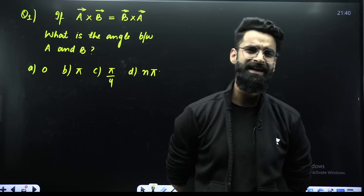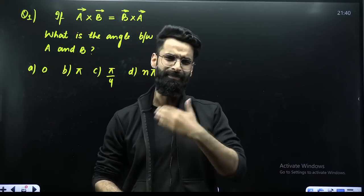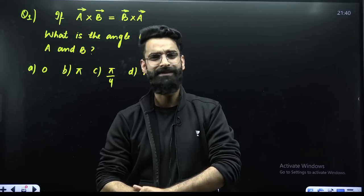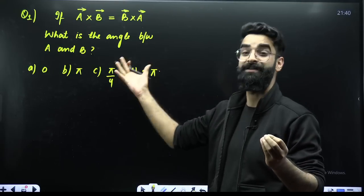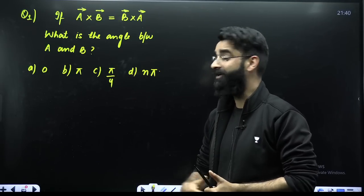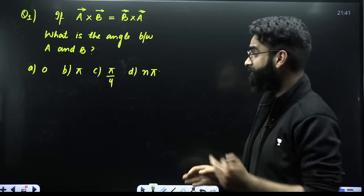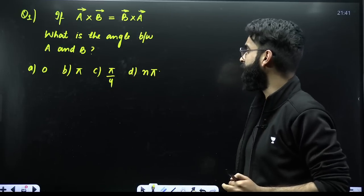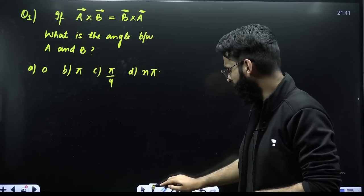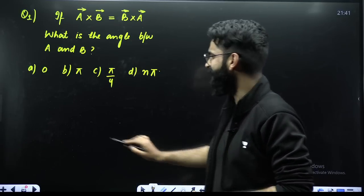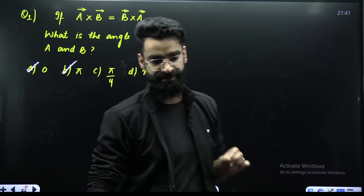They have been asked in the JEE examinations, but they are short, NEET-oriented questions. And I believe the questions which I have chosen, you might make a mistake while solving these. For example, one very simple and basic question from the chapter vectors. Have a look at the question and select the most appropriate answer. The question says: if A cross B is equal to B cross A, what is the angle between A and B? I know majority of students will either say 0 or Pi, but I am telling you to select the most appropriate answer.